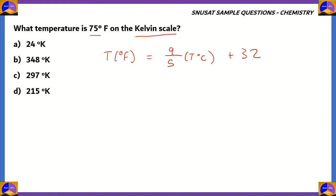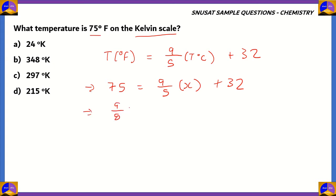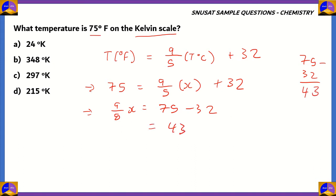We know the temperature in degrees Fahrenheit is 75, so: 75 = (9/5) × x + 32, where x is the temperature in degrees Celsius. Taking 32 to the other side: (9/5)x = 75 − 32. 75 minus 32: 5 minus 2 is 3, 7 minus 3 is 4. So 43 = (9/5)x.